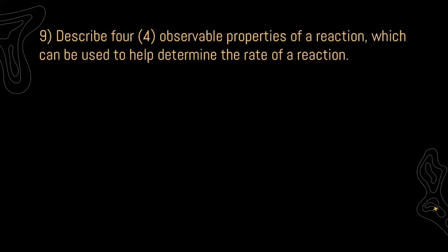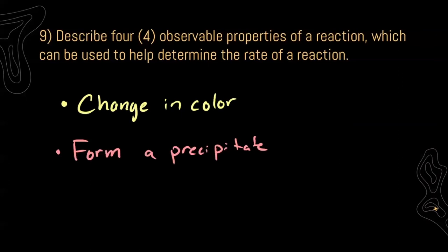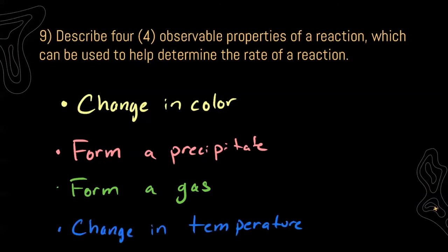Question 9 asks: describe four observable properties of a reaction which can be used to help determine the rate of a reaction. Our first one is a change in color — think about the Statue of Liberty. It's made out of copper and copper is brown, but if you look at it in pictures now it's green. That's the oxidation reaction happening. We can also observe when they form a precipitate — sometimes a reaction might form some crystals at the bottom — or they'll form a gas, which lets us know there's a reaction going on. Lastly, a change in temperature — sometimes our flasks will get cold or warm, and that's how we know that a reaction occurred.